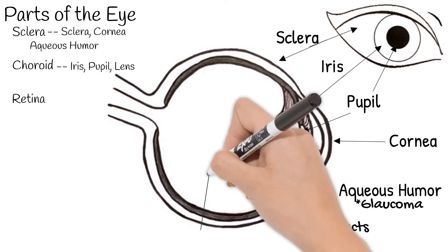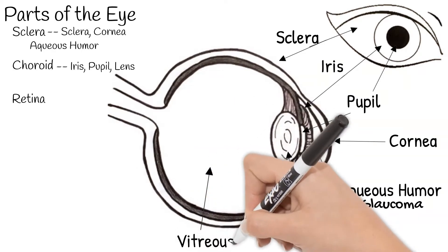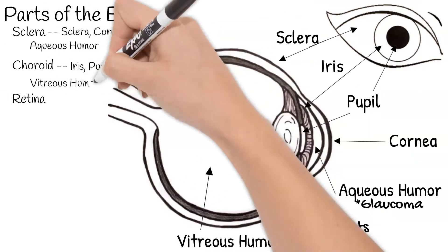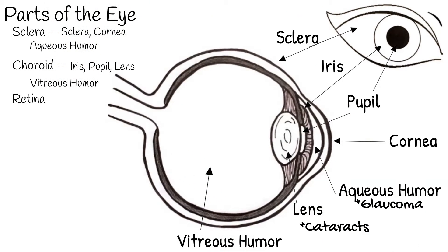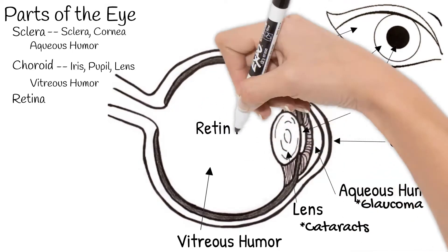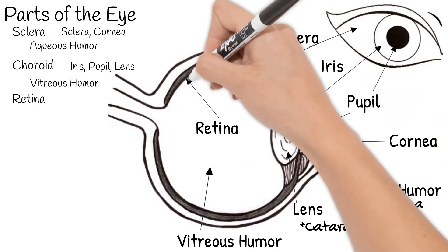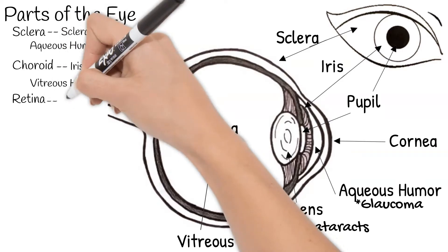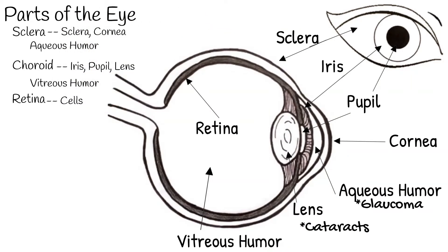Behind the lens is the vitreous humor — a cloudy, jelly-like material which helps maintain eye shape and lets light through. The most inner layer is the retina. The retina is made up of layers of cells, and two types of these cells are light sensitive and are called rods and cones.